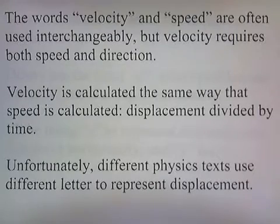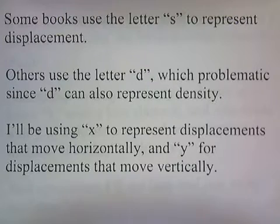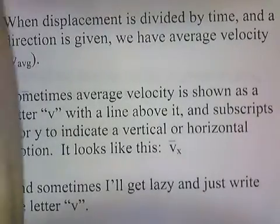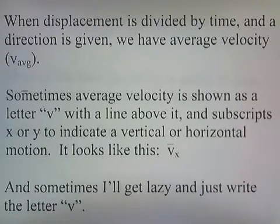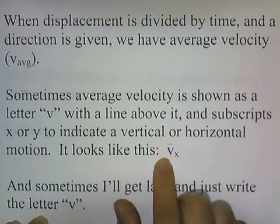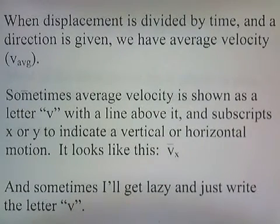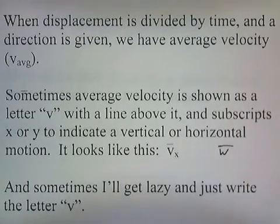Different physics texts use different letters to represent displacement. Some books use the letter S; others use the letter D, which is problematic since D can also represent density. I'll be using the letter X to represent displacements that move horizontally, and Y for displacements that move vertically. Average velocity is sometimes shown as the letter V with a line above it — that line notation means average. Subscripts X or Y indicate horizontal or vertical motion.